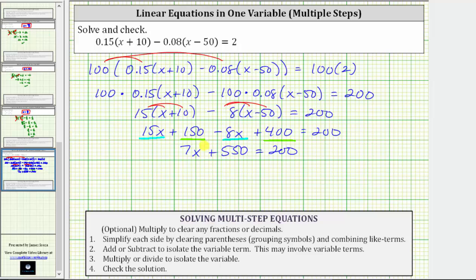The next step is to add or subtract to isolate the variable term of 7x. To undo the addition, we subtract 550 on both sides. Simplifying, 550 minus 550 is zero, giving us 7x equals 200 minus 550 is negative 350.